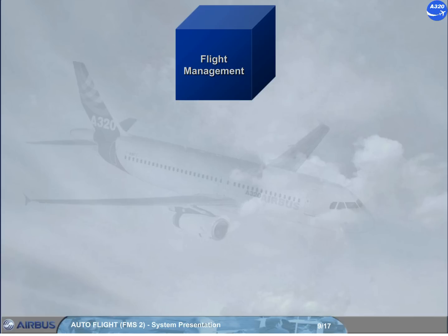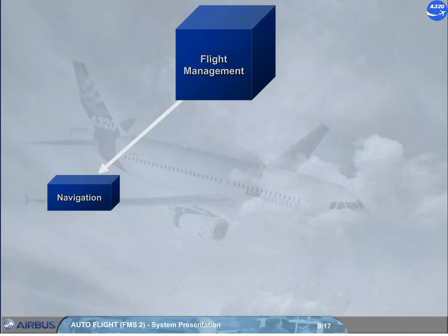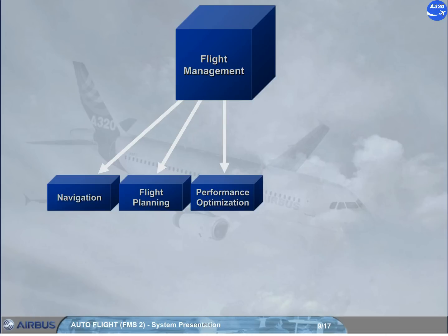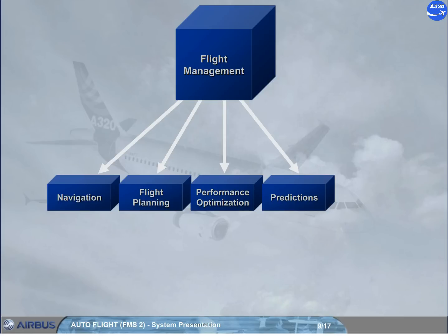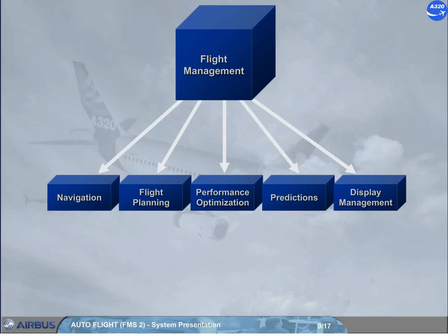The flight management part of the FMGS controls the following functions: Navigation — the position of the aircraft and the estimated accuracy of this position. Flight planning — the flight plan computation. Performance optimisation — costs, speeds, and altitude optimisation. Predictions — accurate estimates for waypoints, altitudes, speeds, fuel, destinations, and alternates. Display management — the control of information to the EFIS system to display autoflight modes and navigation information.